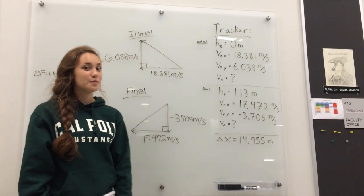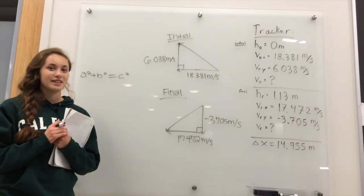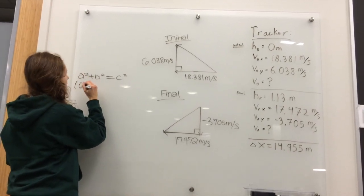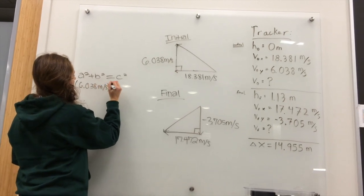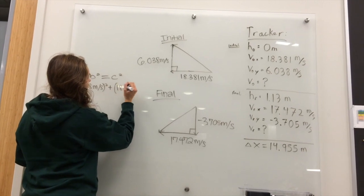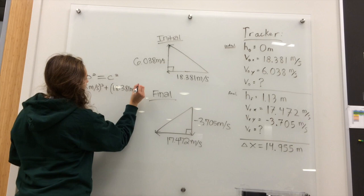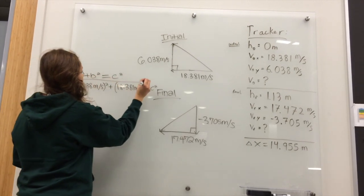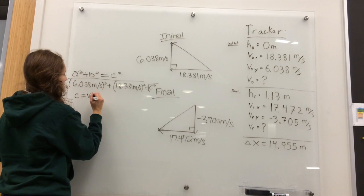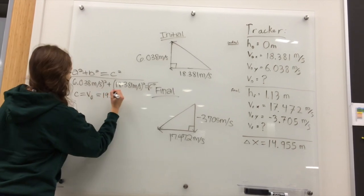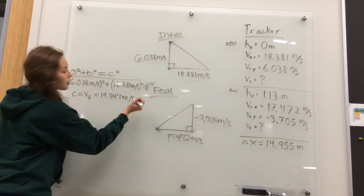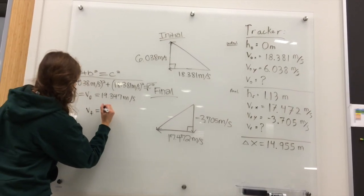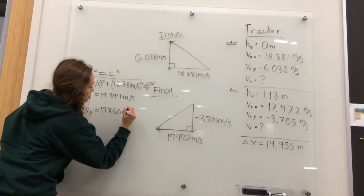We can use the Pythagorean theorem to find the magnitude of the initial and final velocities. We plug in the initial velocity on the y-axis, square it, and add the initial velocity on the x-axis squared, equal to the magnitude of the initial velocity squared. Taking the square root of each side, the initial velocity equals 19.347 meters per second. Doing the same for the final velocity, we get 17.86 meters per second.